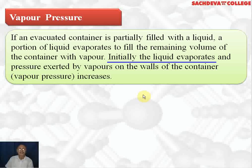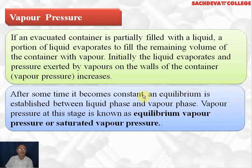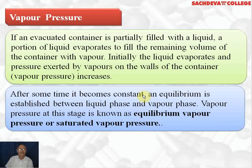Initially the liquid evaporates and the vapor pressure increases. After some time it becomes constant and equilibrium is established between the liquid phase and vapor phase. Equilibrium means the rate of changing liquid into vapors and vapors into liquid becomes equal.